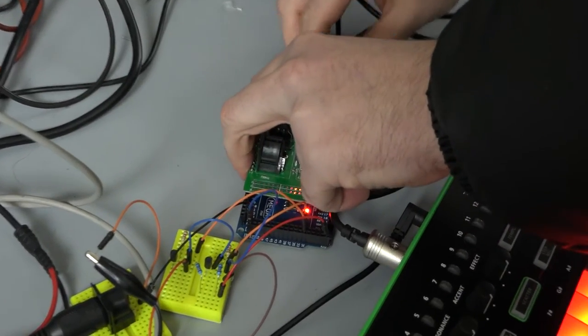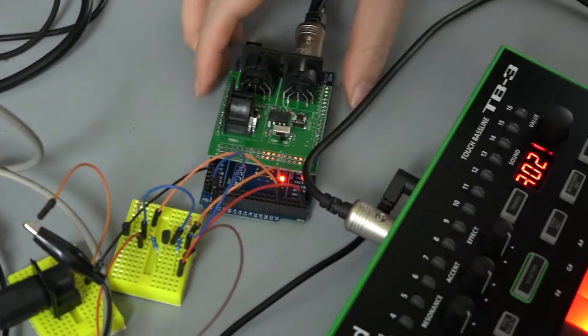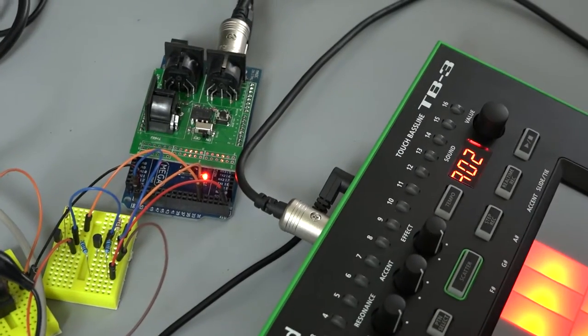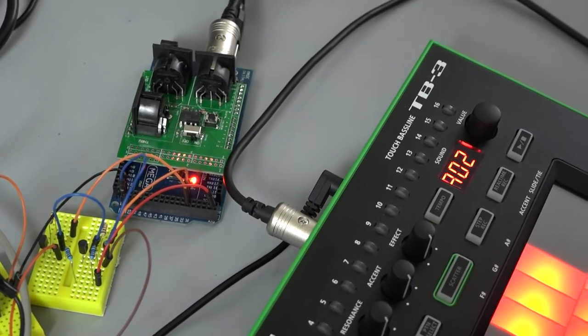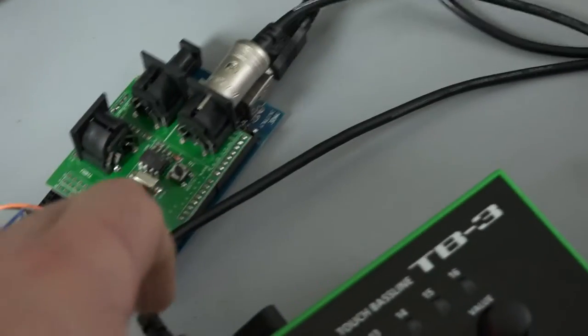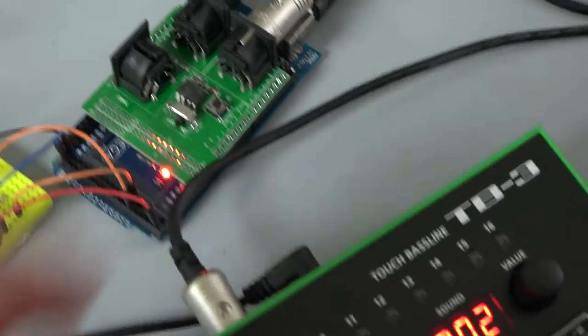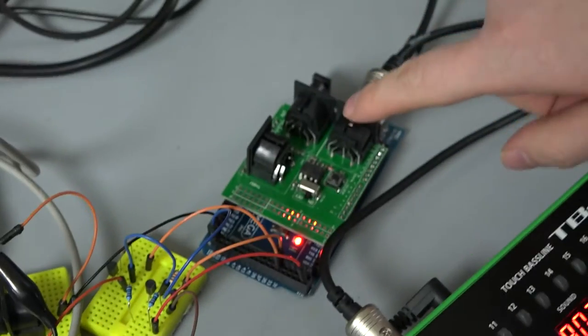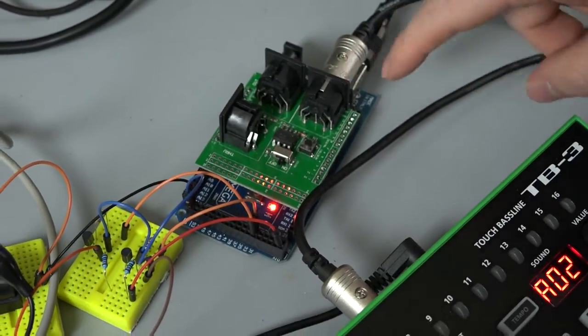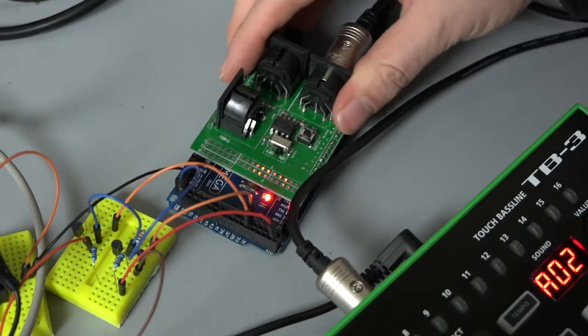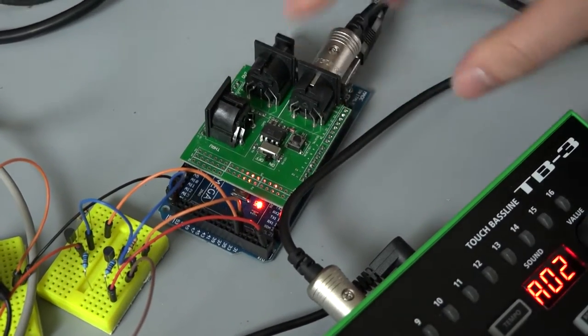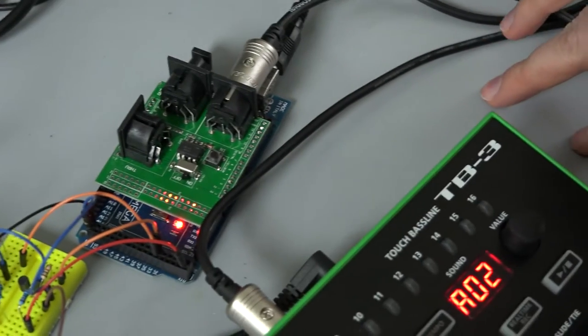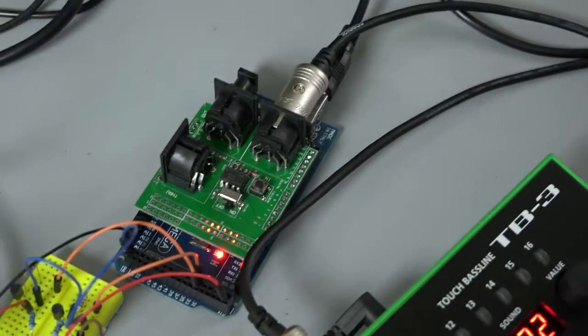So this board is Arduino with some kind of software, firmware which I have written to convert. You can buy it. This is just usual MIDI in, so optical 6N137. Whatever. So it's an optical isolator for MIDI in.